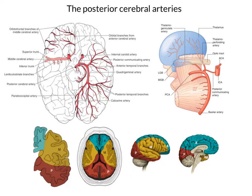Their cortical distribution is the occipital lobe, if we look at the images at the bottom, and the inferior aspect of the temporal lobe. However, they have two very important subcortical distributions.